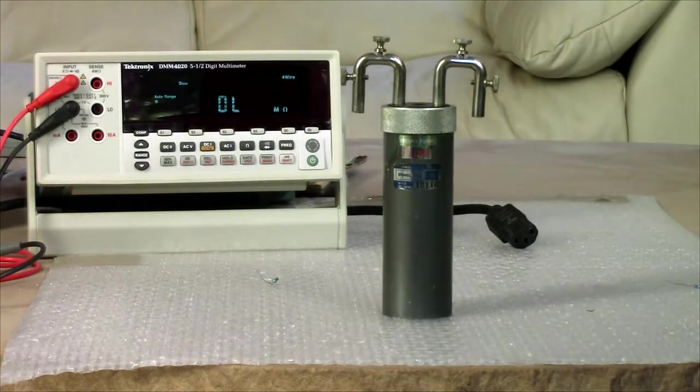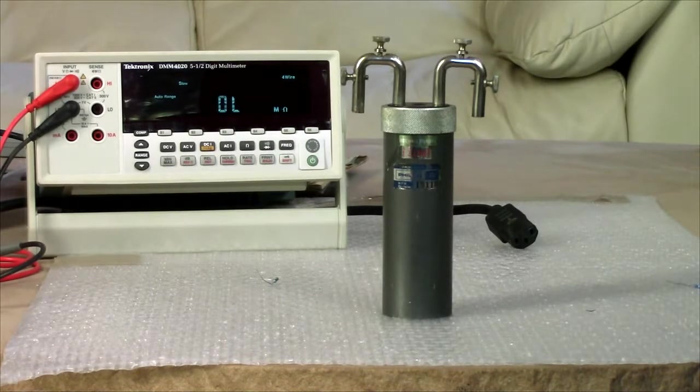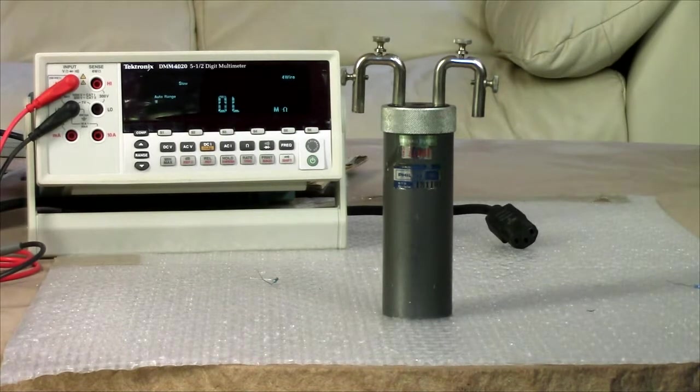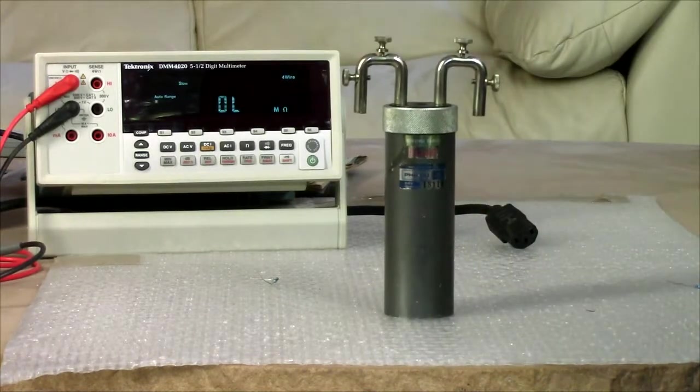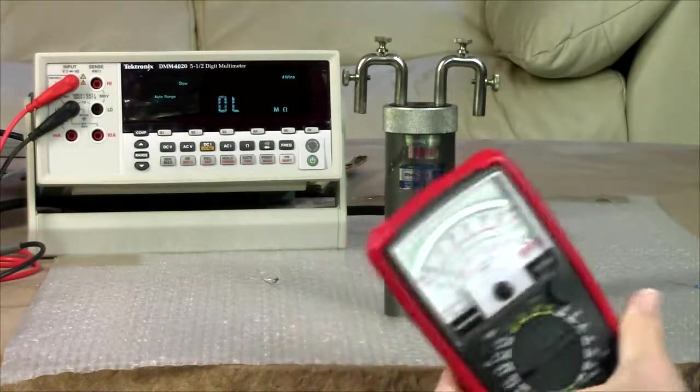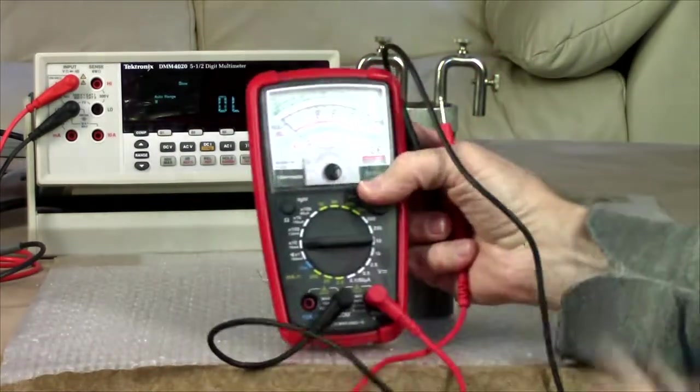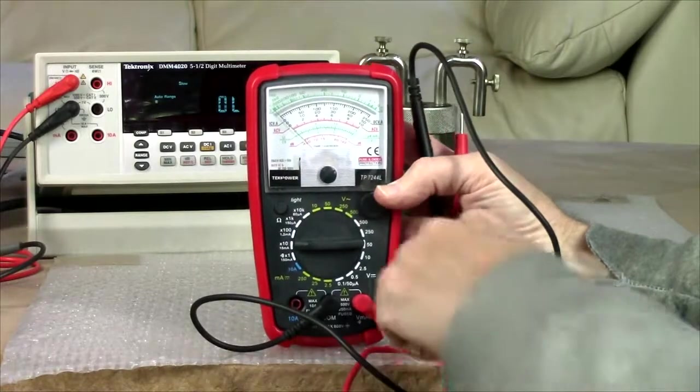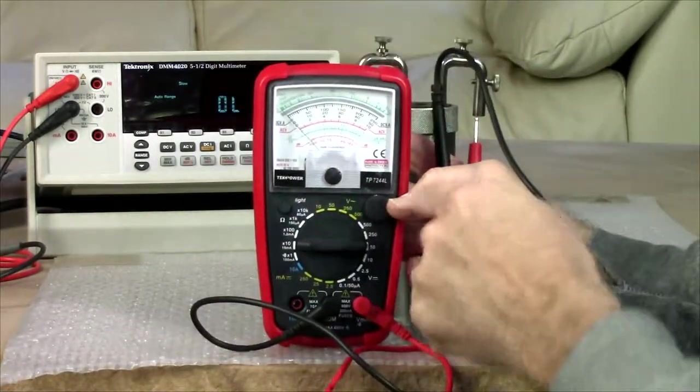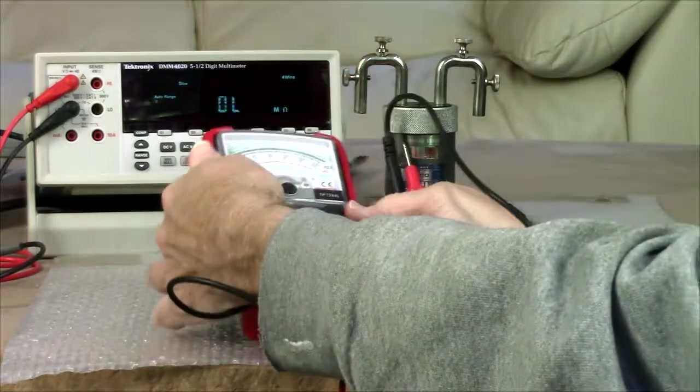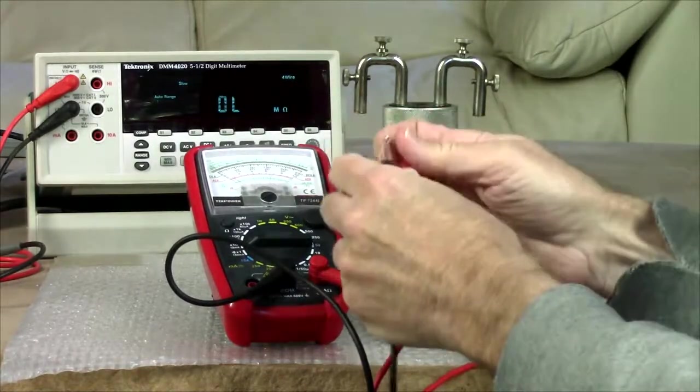Before we had digital multimeters, look at what it took to get a precise resistance measurement. Now you'd start, and this wouldn't be very accurate. You'd have an analog meter like this, except yours would be bigger and it would be solid black and it would say Simpson instead of Tech Power.